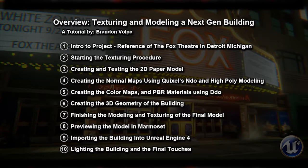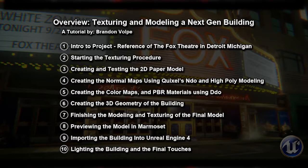The second chapter will be starting the texture procedure. The third lesson will create and test a 2D paper model, which is basically just a flat plain wall for each part of the building, so we know our modular pieces fit together right. Then we'll be creating some normal maps using DDU and high-poly modeling, a mixture of both, and even some bitmap-to-normal scripts.